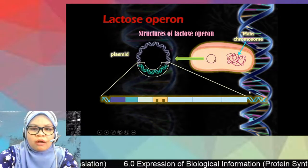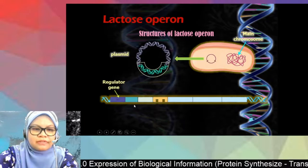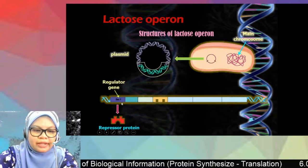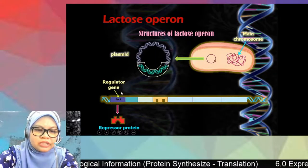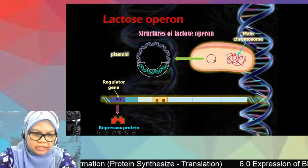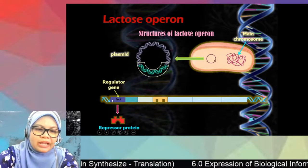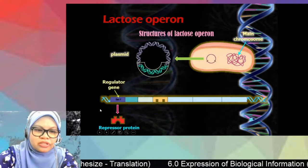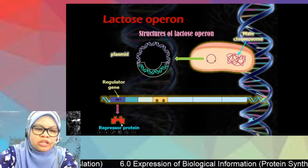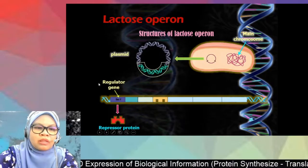The lac operon system consists of the regulator gene, also known as lacI. This regulator gene, lacI, codes for the repressor protein. When lacI is transcribed, it produces mRNA, and after translation the mRNA produces repressor protein. That is why we call it the regulator gene — it codes for repressor protein.